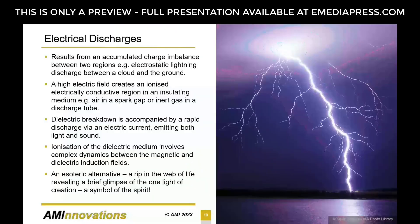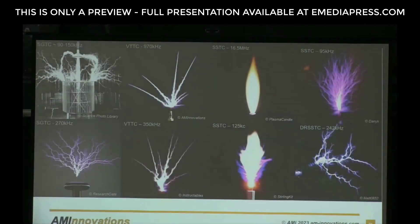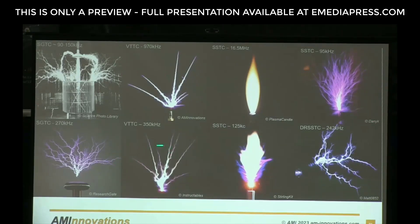We've all experienced lightning — it results from an accumulated charging imbalance between two regions, such as between the cloud and the ground. That's electrostatic discharge. A high electric field creates an ionized, electrically conductive region in an insulating medium — air in a spark gap or an inert gas in a discharge tube. Dielectric breakdown is accompanied by a rapid discharge emitting both light and sound. Ionization of the dielectric medium in corona discharge — the SORD's discharge — has lots of straight streamers going out the top, the kind of discharge you get from a lower frequency spark gap or disruptive Tesla coil.